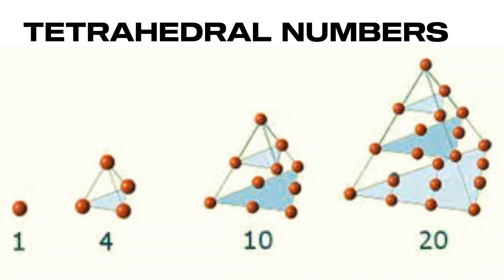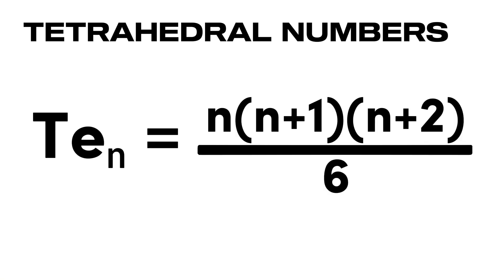Examples include 1, 4, 10, 20, and so on. Using this formula, we can find the nth tetrahedral number. That's pretty long.